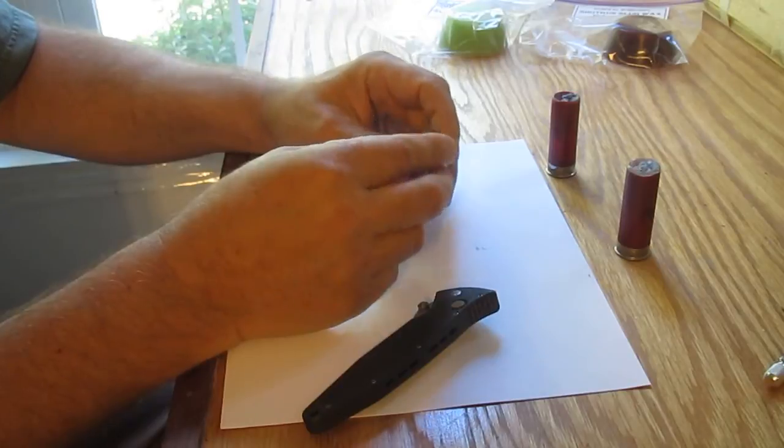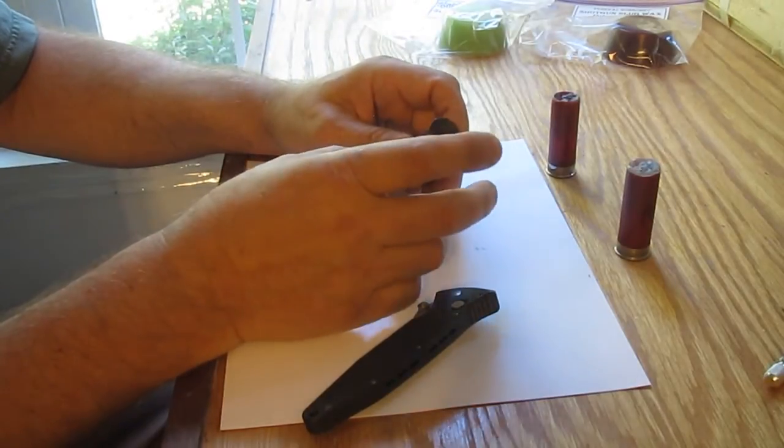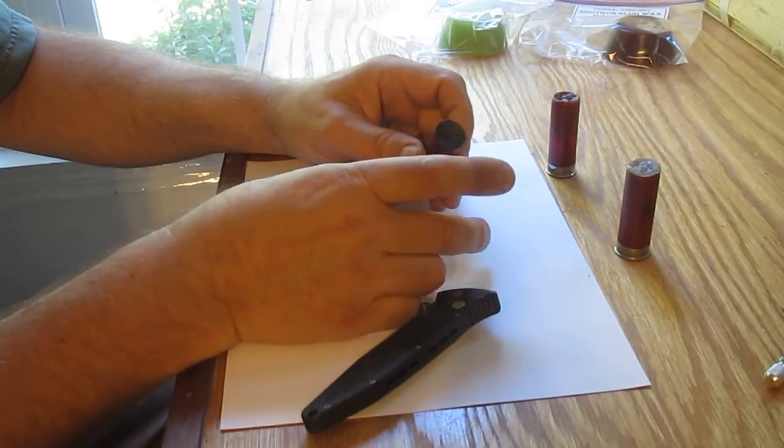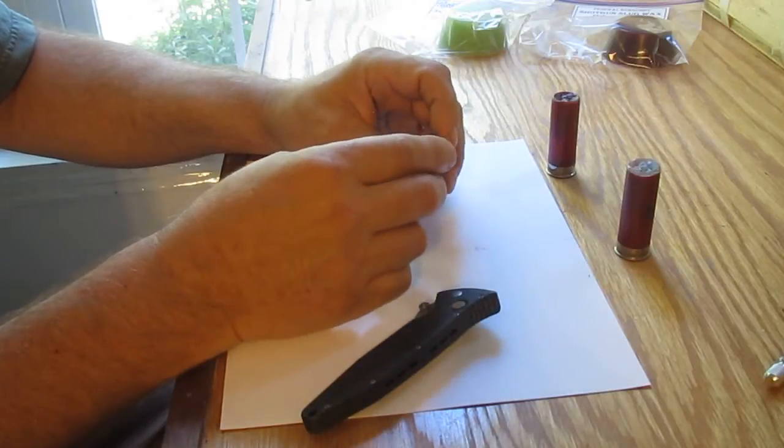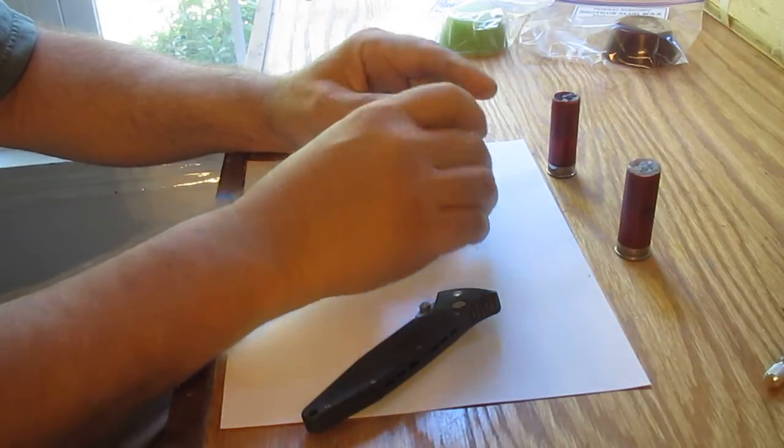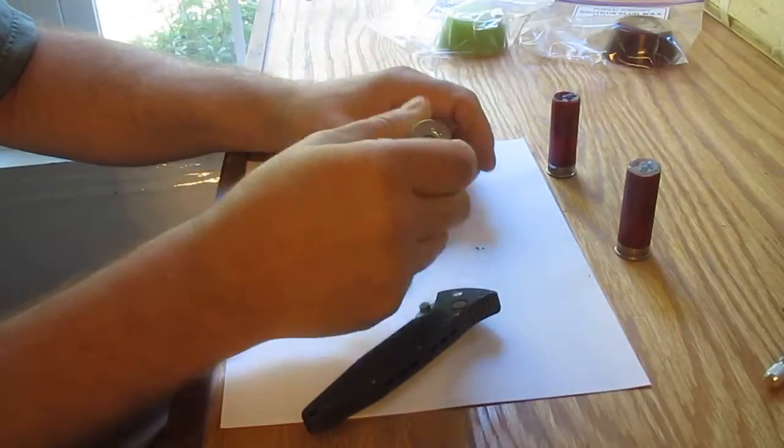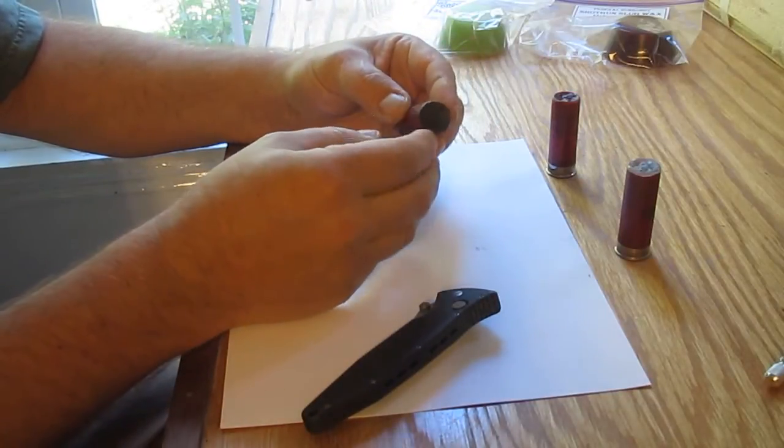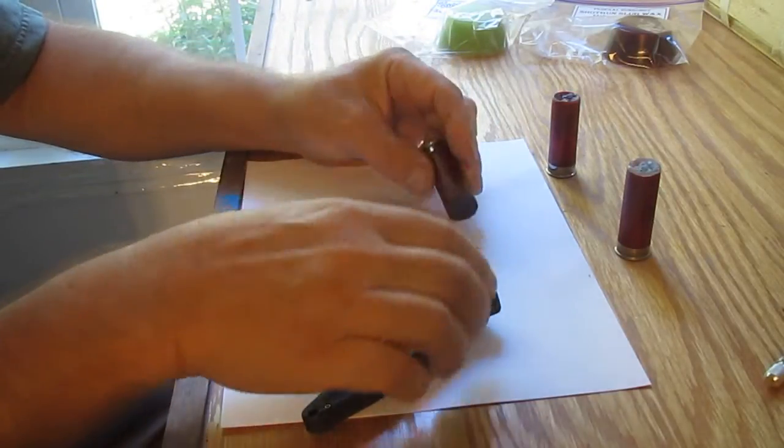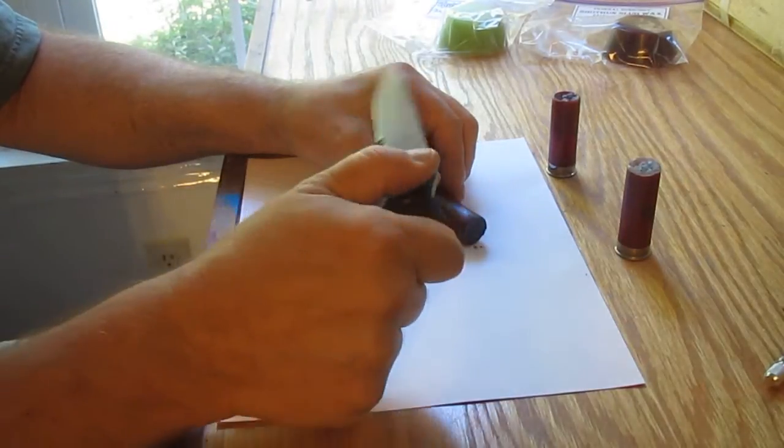This wax was heated directly on the electric stove using a little can until the wax almost smoked, so it was very liquidy. It grabs great. This is also one of my trimmed hulls that has stuff inside, so it kind of grabs it.